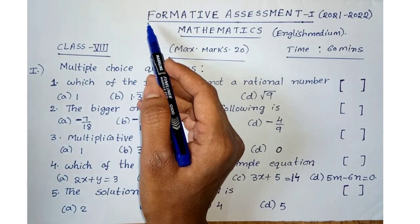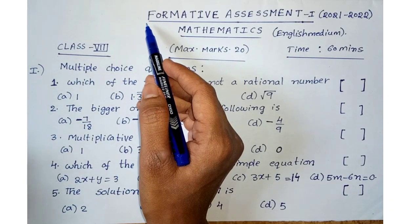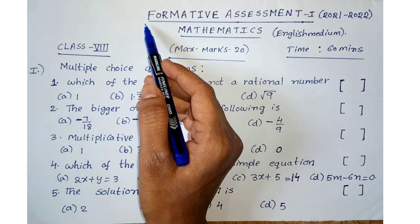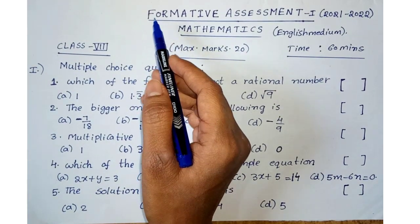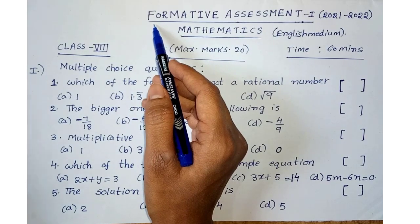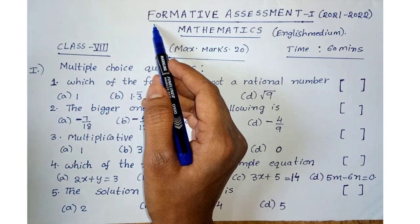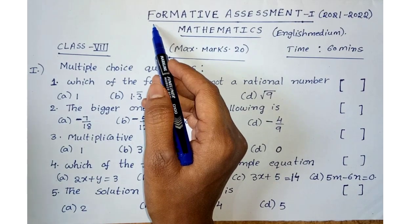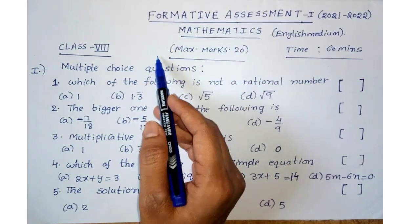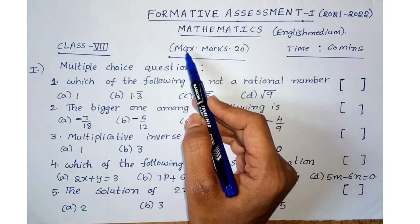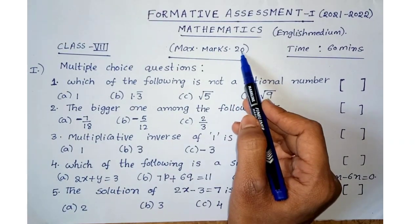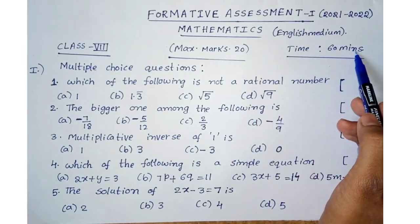Hi students, welcome to my channel. Dear students, please like the video and support me. In this video, I am going to explain the 8th class FA1 model paper. Students, this is only a model paper, not a real paper. The FA1 exam has a total maximum of 20 marks and a time duration of 60 minutes.